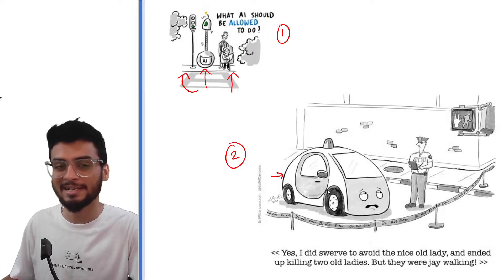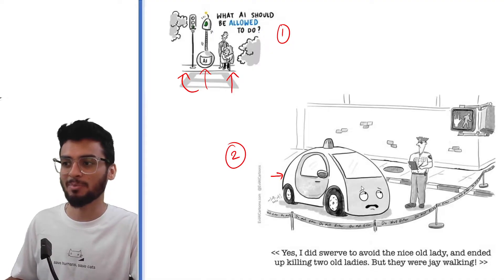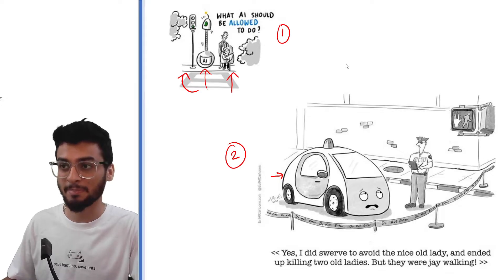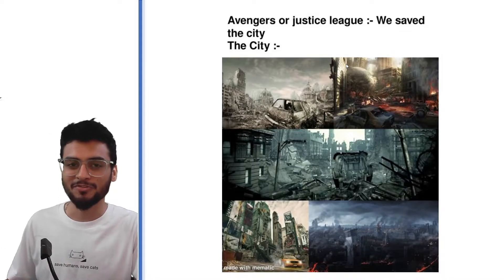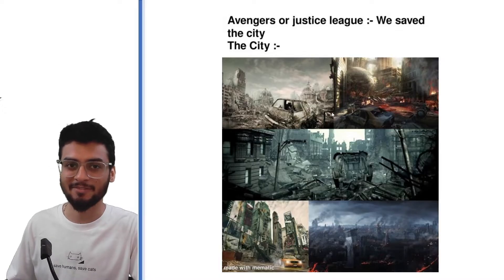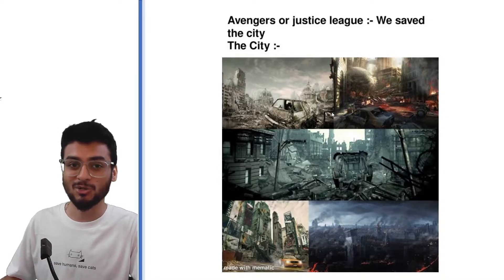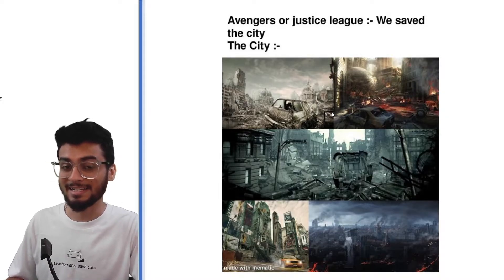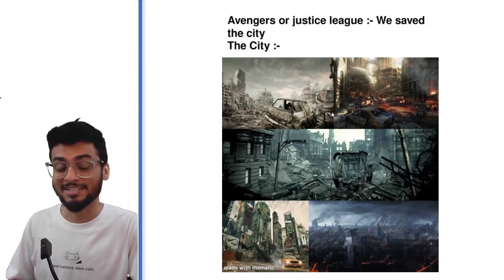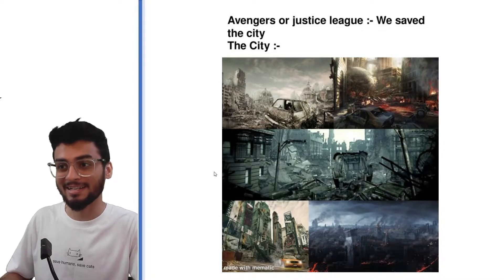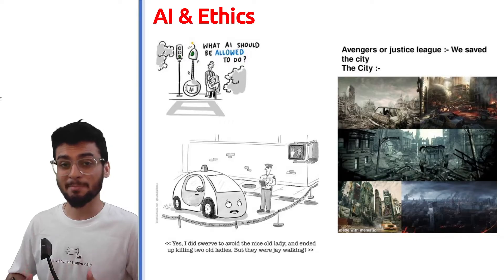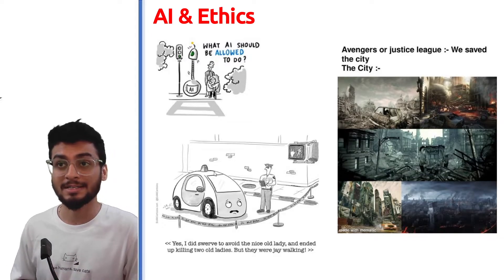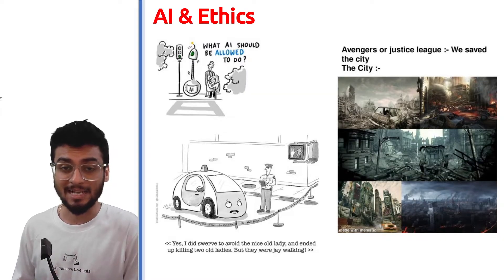Would it be the engineer who created the vehicle, or the company to which this vehicle belongs? These are certain kinds of questions which arise when you read about AI — who will be blamed? If you still do not understand with these two examples, consider the Avengers movies. At the end they generally save the earth, but on the contrary they also destroy half of it. Is it ethical behaviour on the Avengers' part to cause such destruction in order to save humanity, where humanity itself is being destroyed? These are the kinds of questions which are solved by AI and ethics.